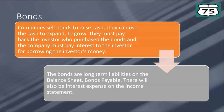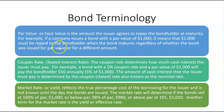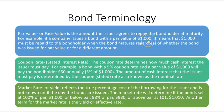The terminology is key. Par value, or face value, is the amount the issuer agrees to repay the bond holder at maturity. For example, if a company issues a bond with a par value of $1,000, that $1,000 is the face value — the amount that must be repaid to the bond holder when the bond matures, regardless of whether the bond was issued at par or at a different amount.